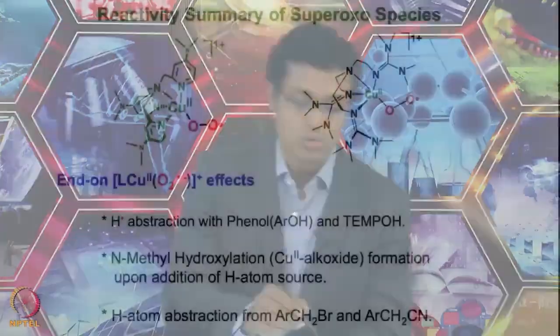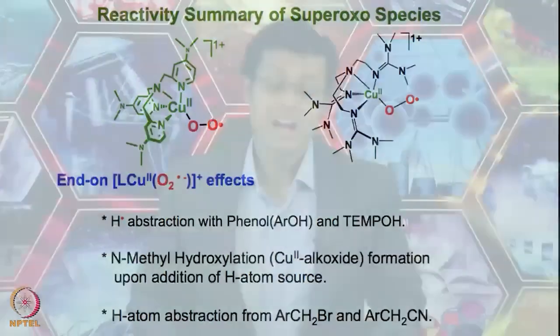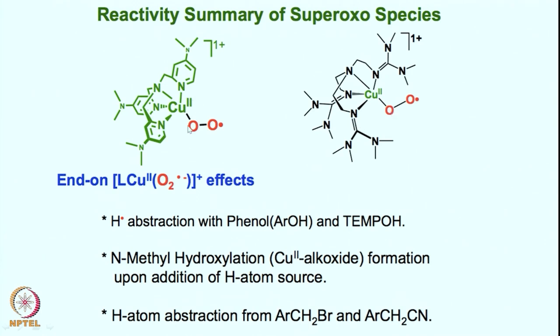Let us look at the summary of what we have seen so far. These two copper superoxo species are capable of doing chemistry parallel to what is seen in the enzyme. Now let us look at the other species we have not seen so much — the hydroperoxo intermediate. As mentioned, these copper superoxo species can abstract a hydrogen atom from the substrate or a suitable H-donor and can form a copper(II) hydroperoxo intermediate.